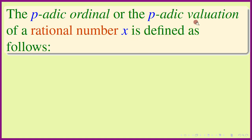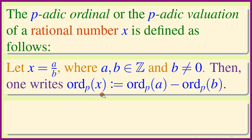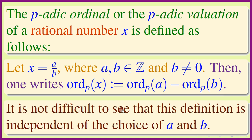The p-adic ordinal, or the p-adic valuation, of a rational number x is defined as follows. Let x = a/b where a and b are integers with b non-zero. Then one writes v_p(x) = v_p(a) − v_p(b), the p-adic valuation of the numerator minus the p-adic valuation of the denominator. It is not difficult to see that this definition is independent of the choice of a and b — that is, if you write x = c/d, then v_p(a/b) = v_p(c/d).